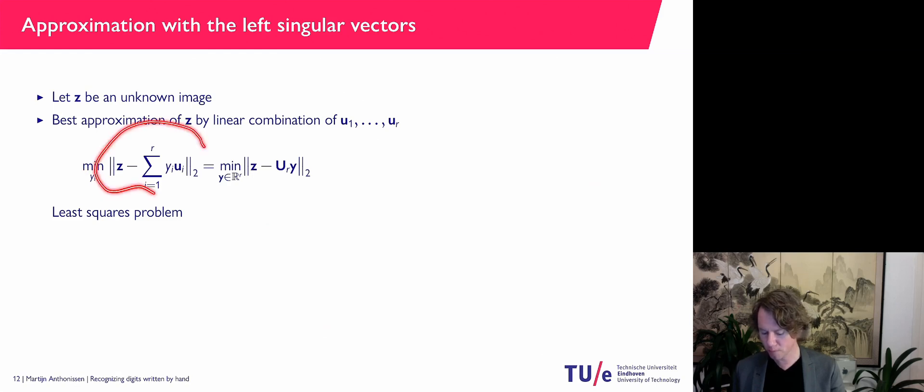the 2 norm of Z minus that linear combination. So I'm going to find the best linear combination to approximate Z using these vectors. Now, if you write that in matrix vector notation, you have to minimize this here. The U matrix is special because the columns are orthonormal.